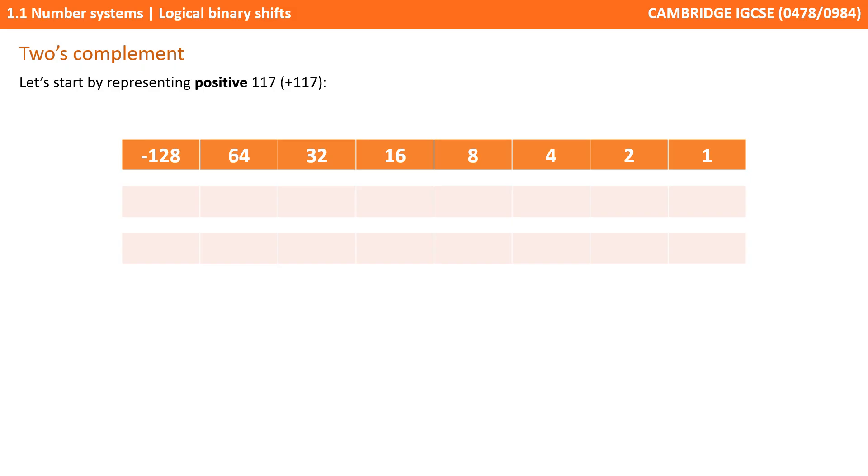Now we've changed our weighting line. Let's try representing the positive number 117. Well, it's a positive number, therefore the most significant bit must be a 0, so we'll pop that in.